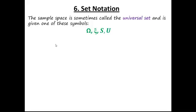We're going to take a look at set notation in this video. This is just a very formal way of writing out some of our probabilities. The first thing we need to know is what the sample space is. We've looked at the sample space before. We sometimes call that the universal set, and it can be represented by any one of these four symbols. The first two are Greek letters: omega and xi, and then S and U.